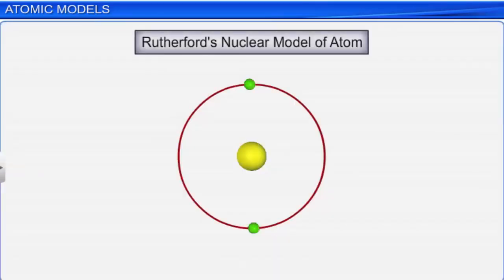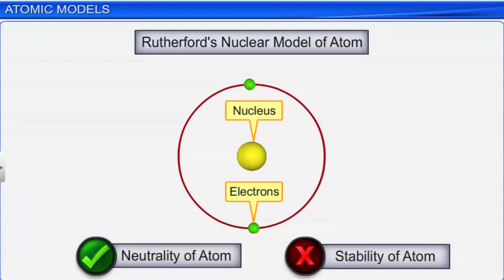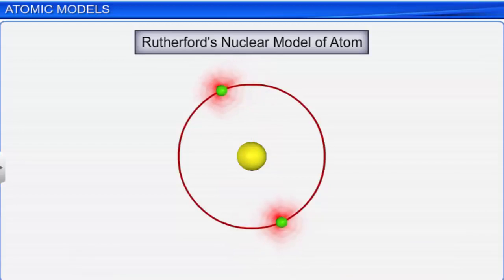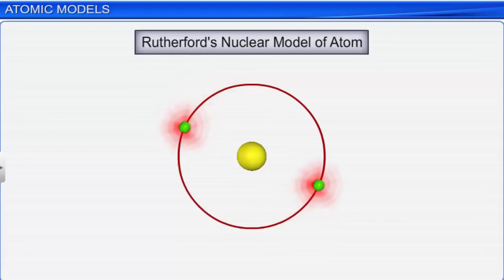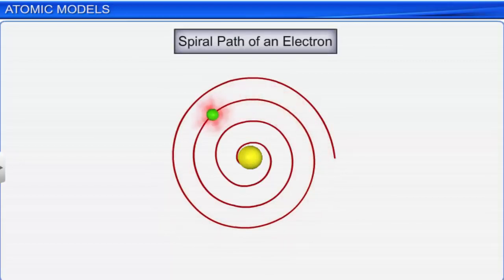Rutherford's model could account for the presence of the nucleus and electrons outside it. However, it failed to explain the stability of an atom. According to Maxwell's theory of electromagnetic radiation, a charged particle in circular motion emits energy continuously. Hence, an electron revolving around the nucleus also loses energy. As a consequence, the electron follows a spiral path towards the nucleus and ultimately results in the collapse of the atom.